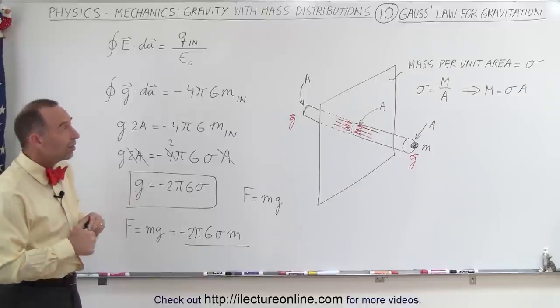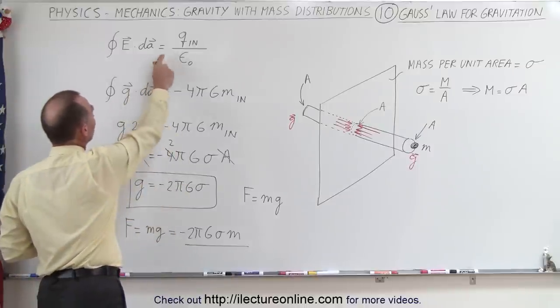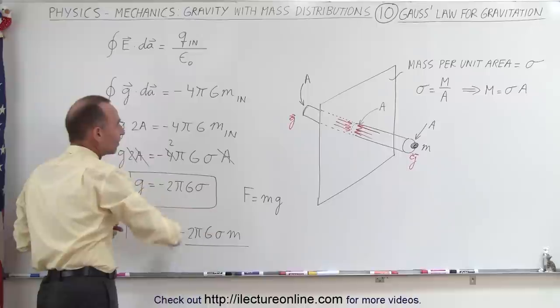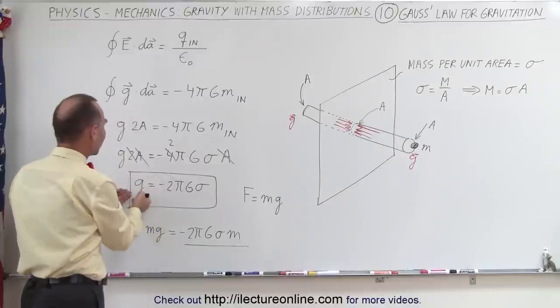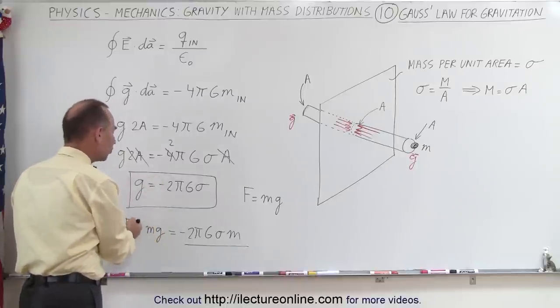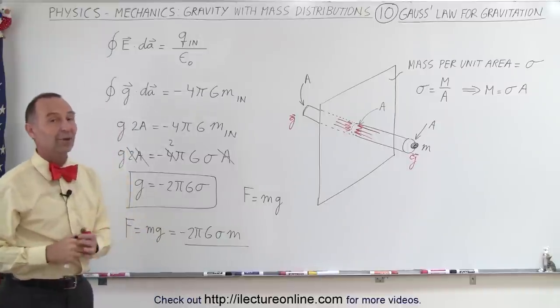Now the reason why we did this example is to show you that just like with electrostatics where we can calculate the strength of the electric field, with gravitational forces we can calculate the gravitational field strength or the force on a small mass using Gauss's law as well. And that's how it's done.